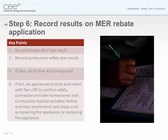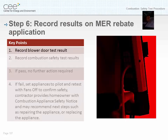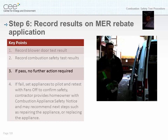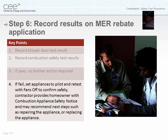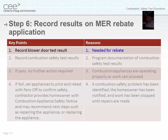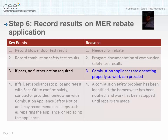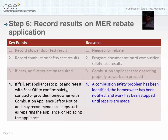Step six: record results on MER rebate application. Key points: record blower door test results; record combustion safety test results. If passed, no further action is required. If fail, set appliance to pilot and retest with fans off to confirm safety; the contractor provides the homeowner with a combustion appliance safety notice and may recommend next steps such as repairing or replacing the appliance. The blower door results are needed for the rebate. Program documentation records whether combustion appliances are operating properly or whether a combustion safety problem has been identified, the homeowner notified, and work stopped until repairs are made.